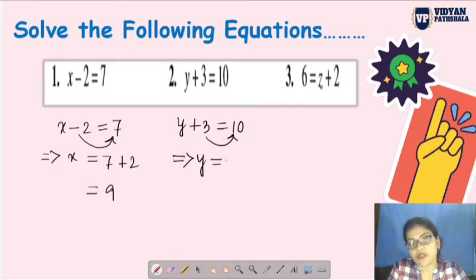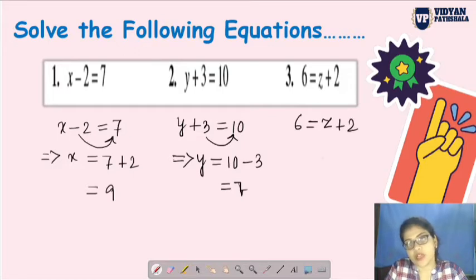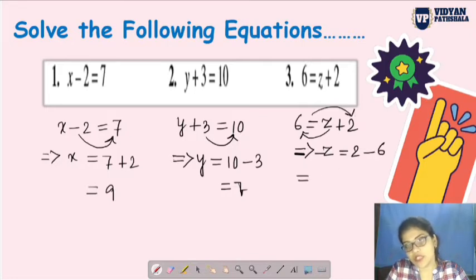So you do it by the transposing method. We will solve all these equations by transposing method. According to that, the first question is x minus 2 equals 7. So here, x equals - when minus 2 goes to this side, what happens? 7 plus 2, meaning 9. See how easy this is. Next equation: y plus 3 equals 10. y is on this side. When we take 3 to that side, 3 was plus, so it becomes minus. 10 minus 3 equals 7.